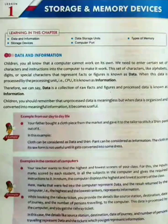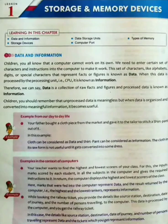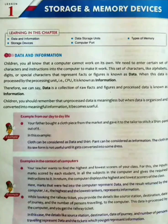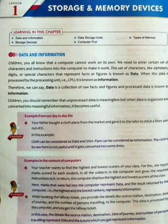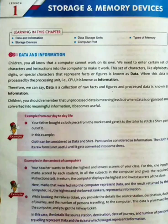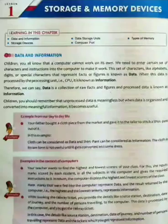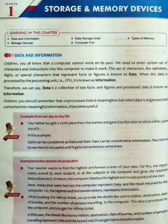For example, your father brought a cloth piece from the market and gave it to the tailor to stitch a shirt out of it. In this example, the cloth can be considered as data and the shirt can be considered as information. The data in its raw form is not useful until it gets converted into some dress. A cloth piece is meaningless to us because we cannot wear a piece of cloth until it is processed or converted into a dress.